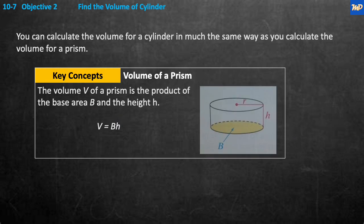Objective 2: find the volume of a cylinder. You can calculate the volume for a cylinder in much the same way you calculate the volume for a prism, just like we did in the previous slides. The key concept here is the volume of a prism is the product of the base area times the height. The formula is the base times the height. The base is this entire area down here, and the height is the height of the cylinder.